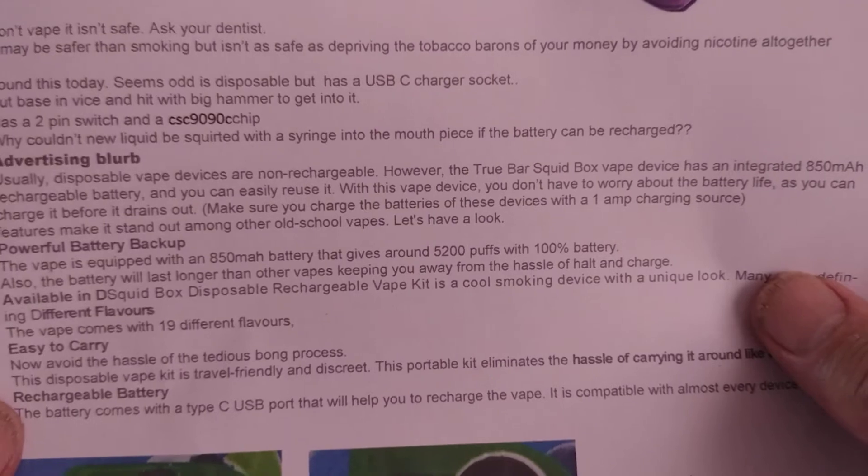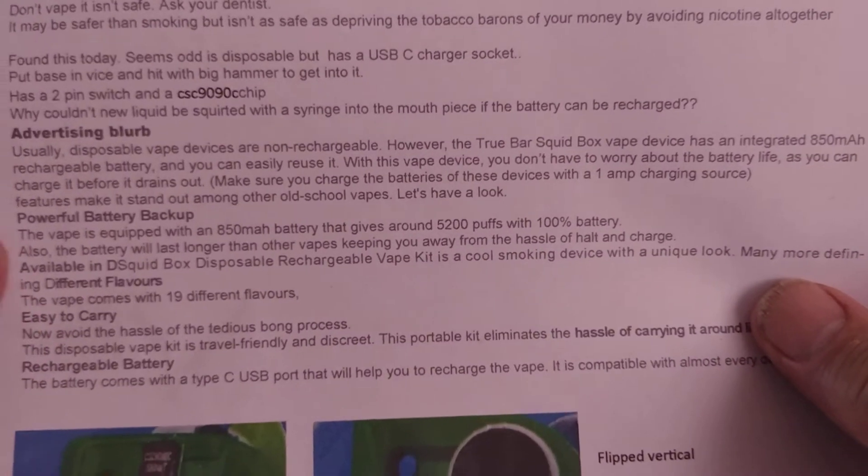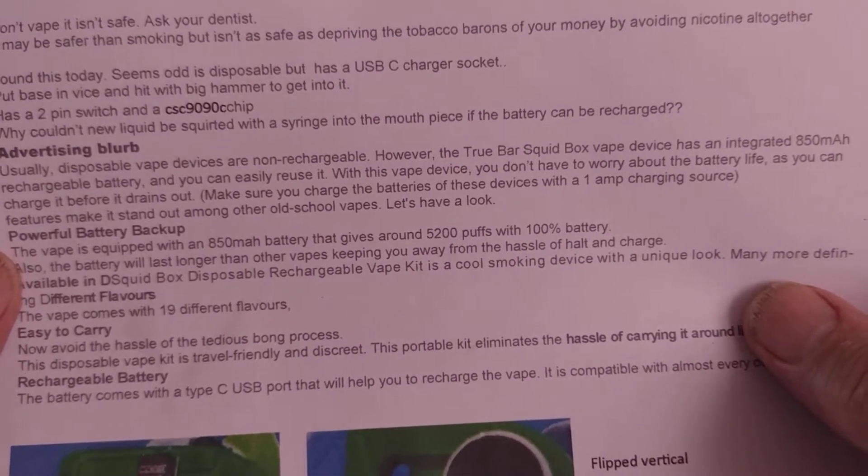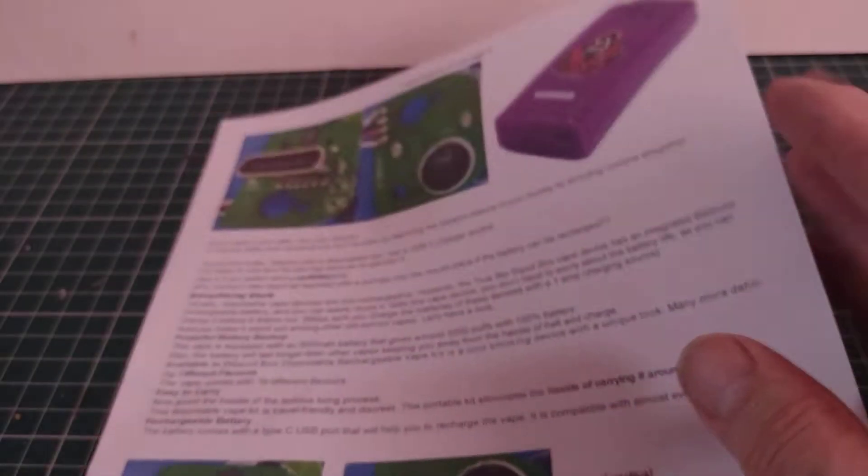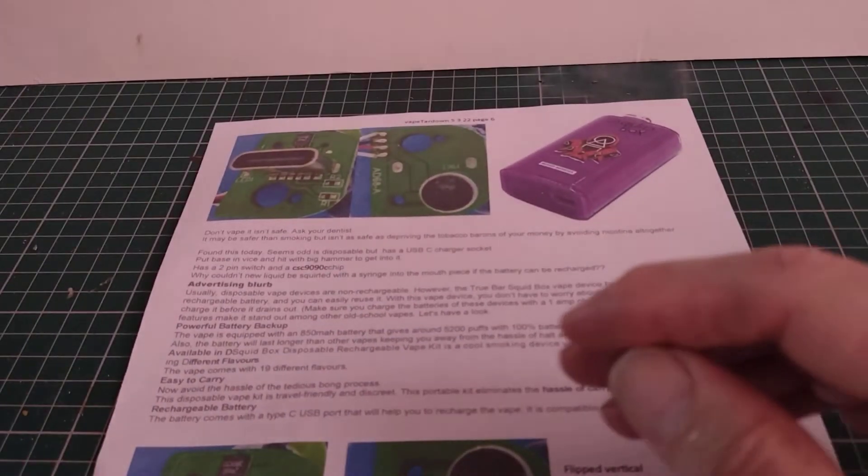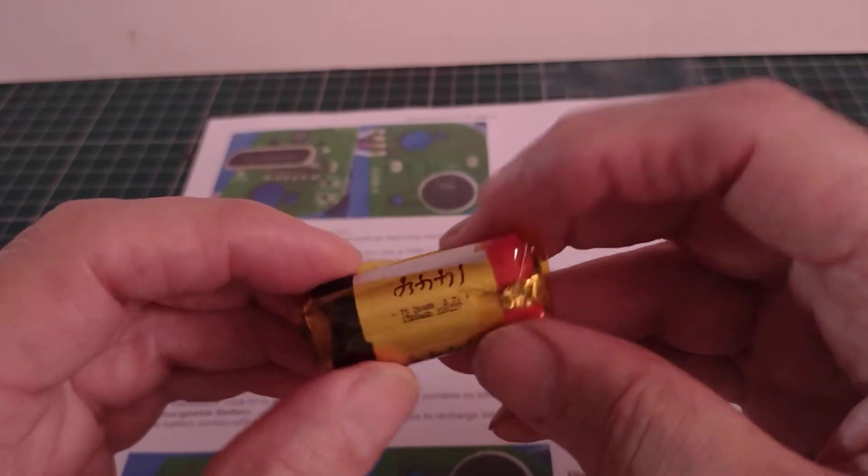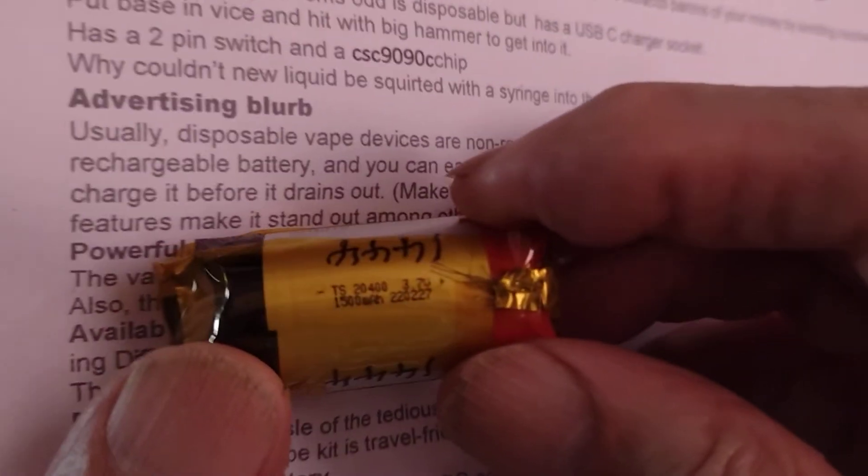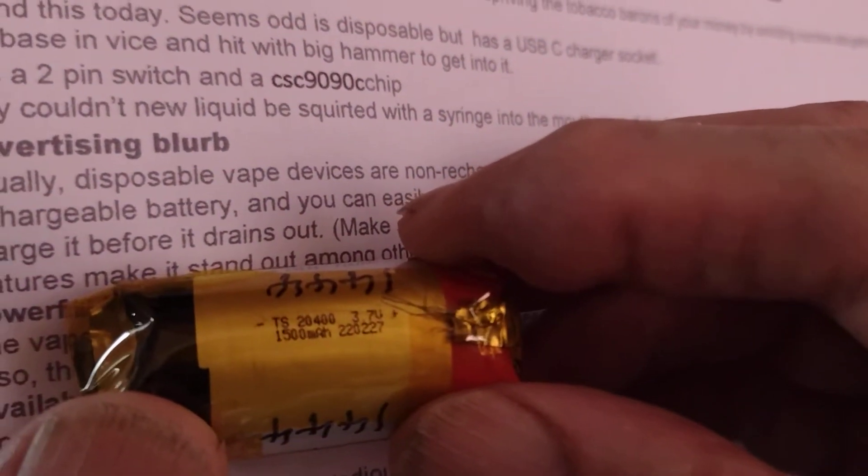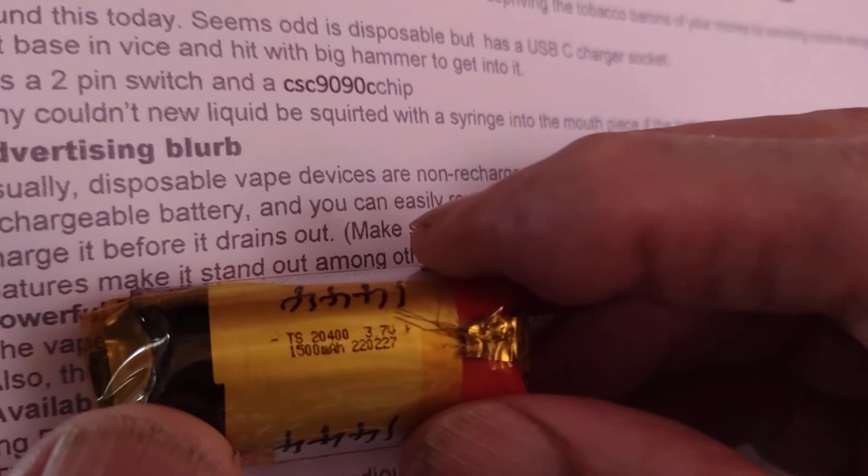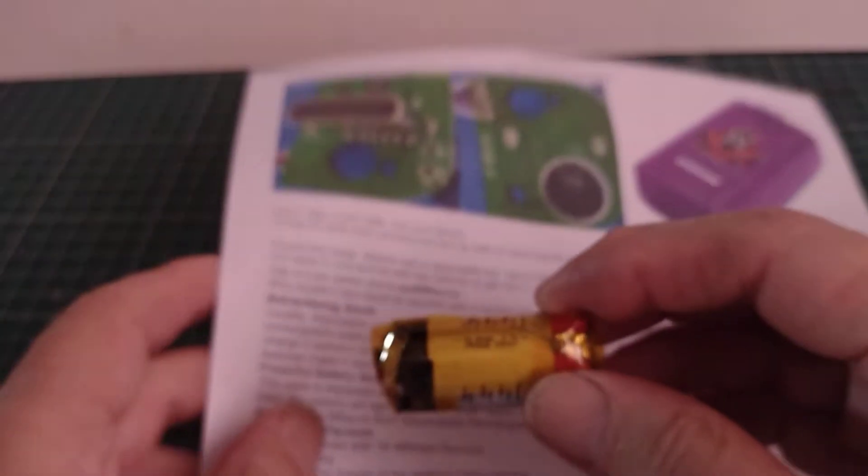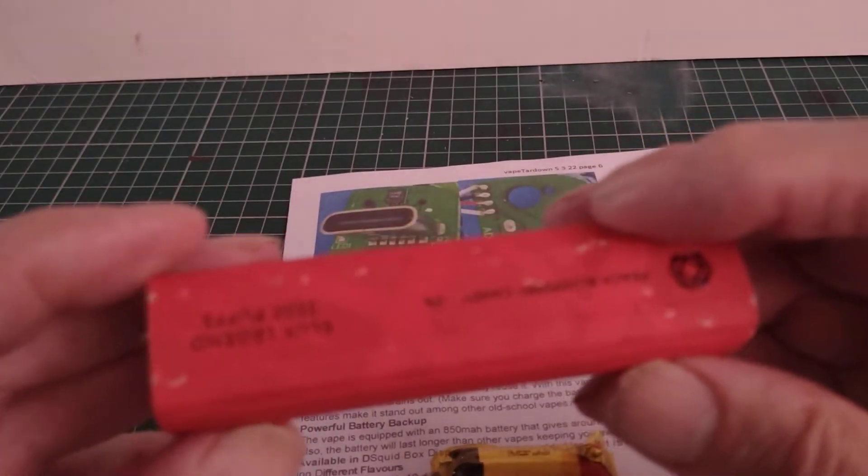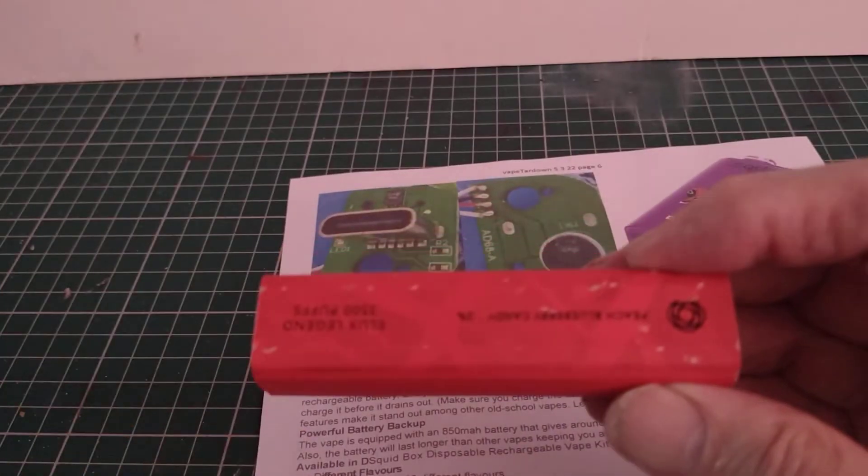So it says it's got powerful battery backup. Well, 850 is pretty miserable as far as I'm concerned. What I'd rather have is a nice big, well I suppose, if we have a look, it says 1500mAh which is well worth having. That came from one of these E-Max or E-Lux battery vapes.